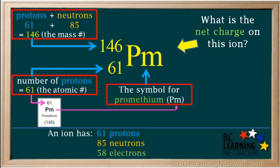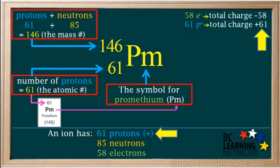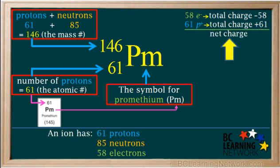The last step is to find the net charge on the ion and write it here on the top right of the symbol. To find the net charge, we compare the number of negative electrons and positive protons. The ion has 58 electrons, which have a total charge of negative 58, and 61 protons, which have a total charge of positive 61. So the net charge is positive 61 and negative 58, which add up to positive 3. There are three more positives than negatives.